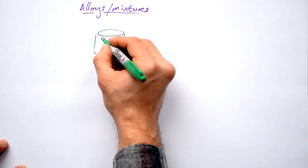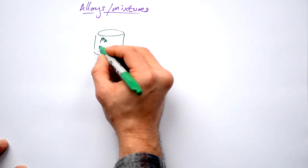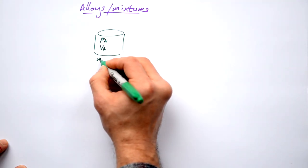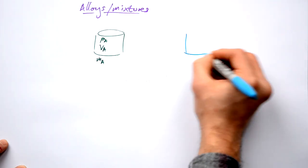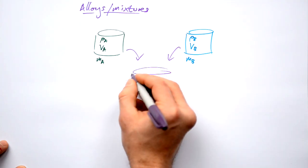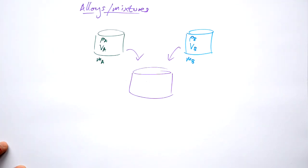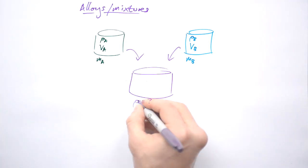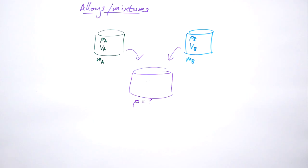So we have one substance that has its own density. It has its own volume and therefore it has its own mass. And we have a second one. What we're going to do is add these two together to make a mixture or an alloy. How do we find out what the density of our new material is?